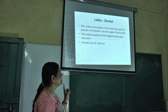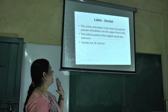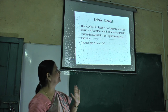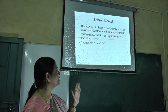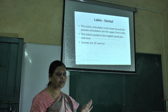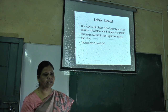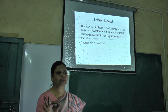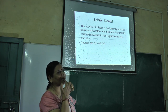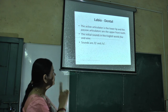Next is labiodental. The active articulator is the lower lip, and the passive articulator is the upper front teeth. The initial sounds in the English words 'fine' and 'vine' — whenever we pronounce these two sounds, /f/ and /v/, the lower lip touches the upper front teeth to produce the sound.